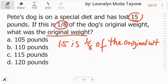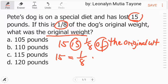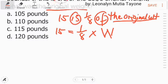Okay. 15 equals yan siya, one-eighth of, multiplication yan, the original weight. Let W is our original weight.